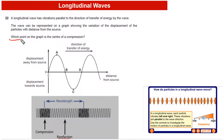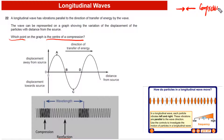Now we have a basic understanding of longitudinal waves, let's answer the question. It's asking us which point on the graph is the center of compression. Compression means particles are moving towards each other. Rarefaction is where particles are moving away from each other.